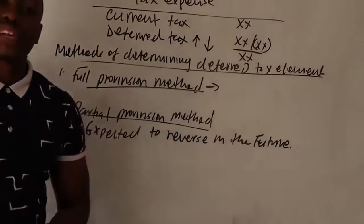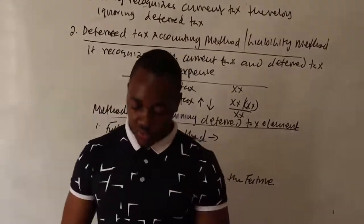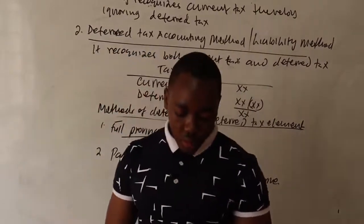Let's do an illustration from a past paper — May 2017, Question 4b. We are told that Moruna Limited is a manufacturing company that provides for deferred income tax in accordance with IAS 12. We are given an extract from the statement of financial position as at 30 April 2017.